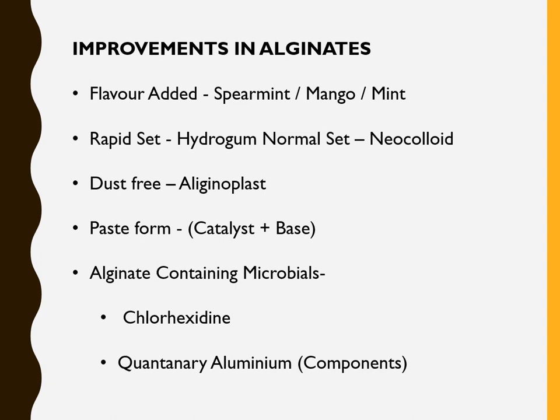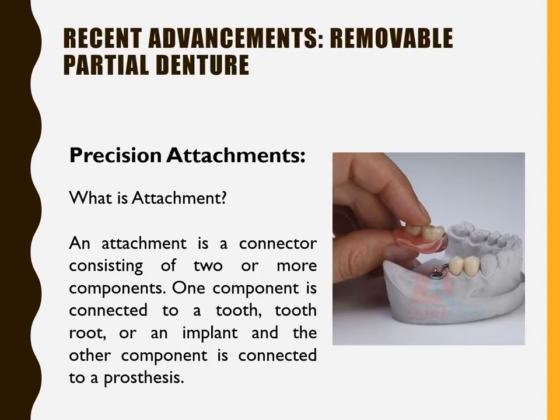Another advance is improvement in alginates. Earlier alginates were unpleasant; improvements have been made in taste and to overcome allergies. Flavors such as mango, mint, and spearmint are now available. There are normal-set and fast-set varieties, including Hydrogum Neocolloid. Other advances include dust-free alginoplast, paste-form alginate, and alginates containing antimicrobials such as chlorhexidine and quaternary ammonium. Using antimicrobial alginates is especially relevant in clinical practice to prevent infections.